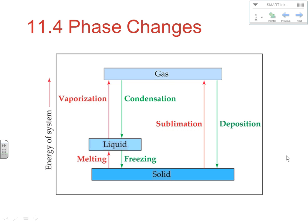You need to understand what's happening with energy between phases. Going from solid to liquid, liquid to gas, or solid to gas requires energy to overcome intermolecular attractions and move molecules farther apart. Going the other direction releases energy. So condensation, deposition, and freezing are exothermic; vaporization, sublimation, and melting are endothermic — you have to put energy in to make those happen.